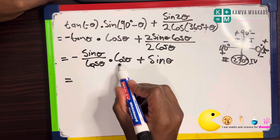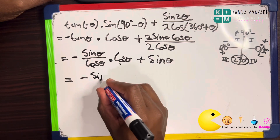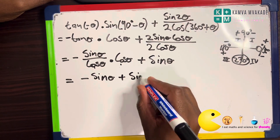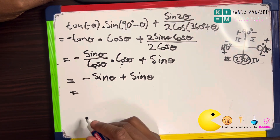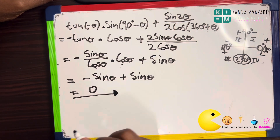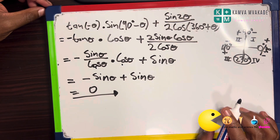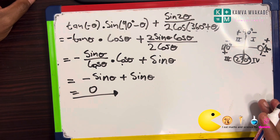We're left with negative sine theta plus sine theta, which equals zero. So the answer to this problem is zero. That's how we approach this problem — and that is it for me. Thank you!